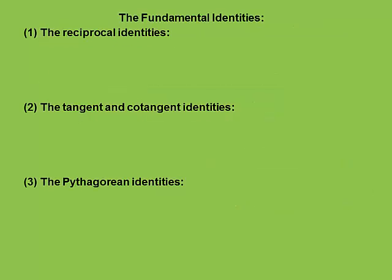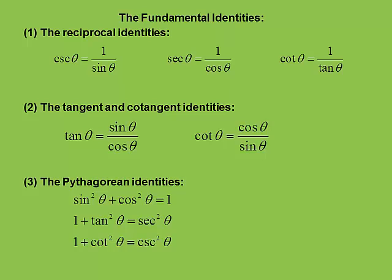Let's wrap up the fundamental identities. I started this out by talking about the three different groupings: the reciprocals, the tangent-cotangent identities, and the Pythagorean identities. Remember, each of those three Pythagorean identities yields two more. But sine squared plus cosine squared equals 1 — plus the two more derived from it — those are your big three right there.